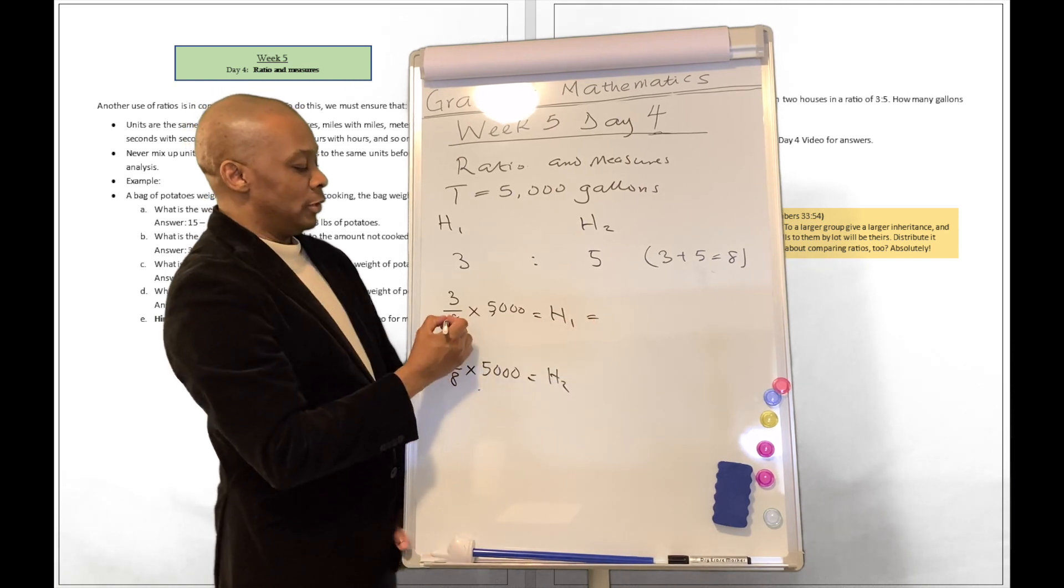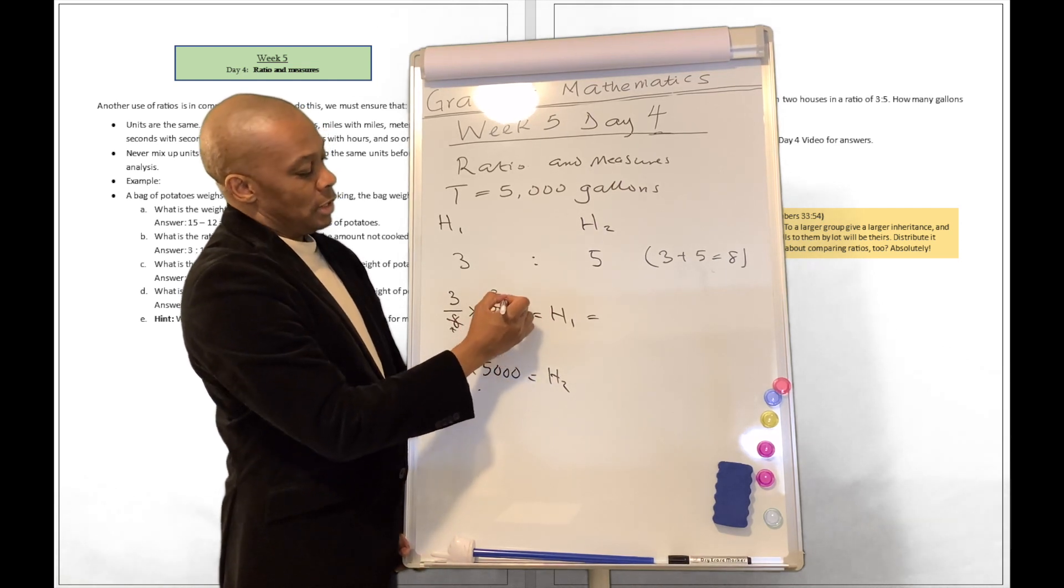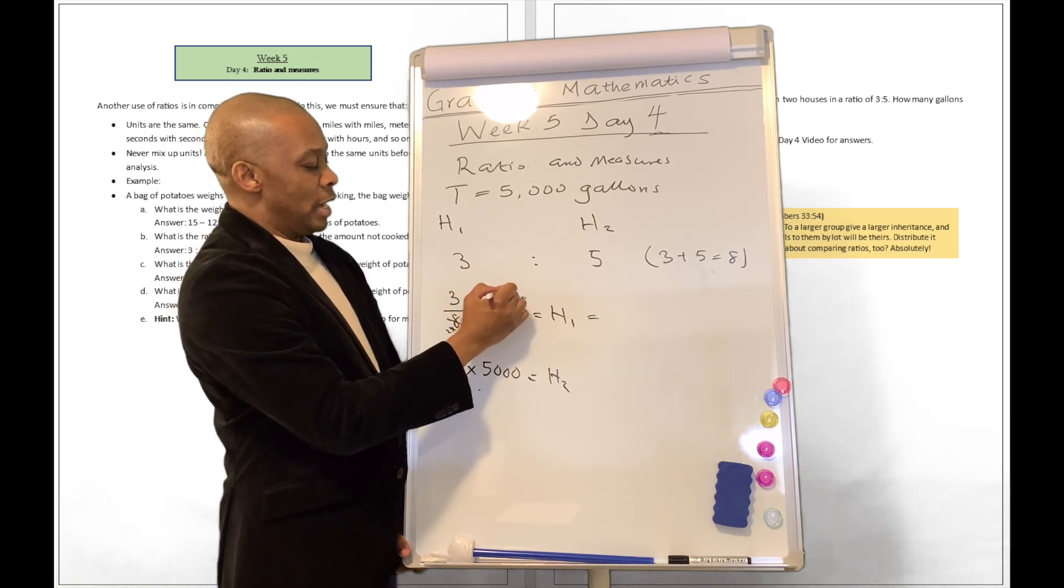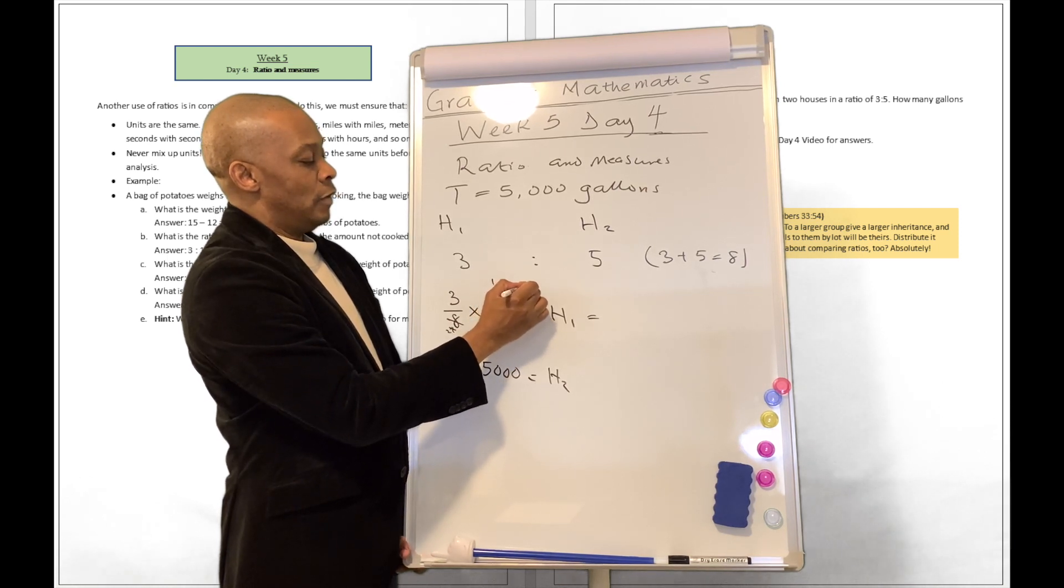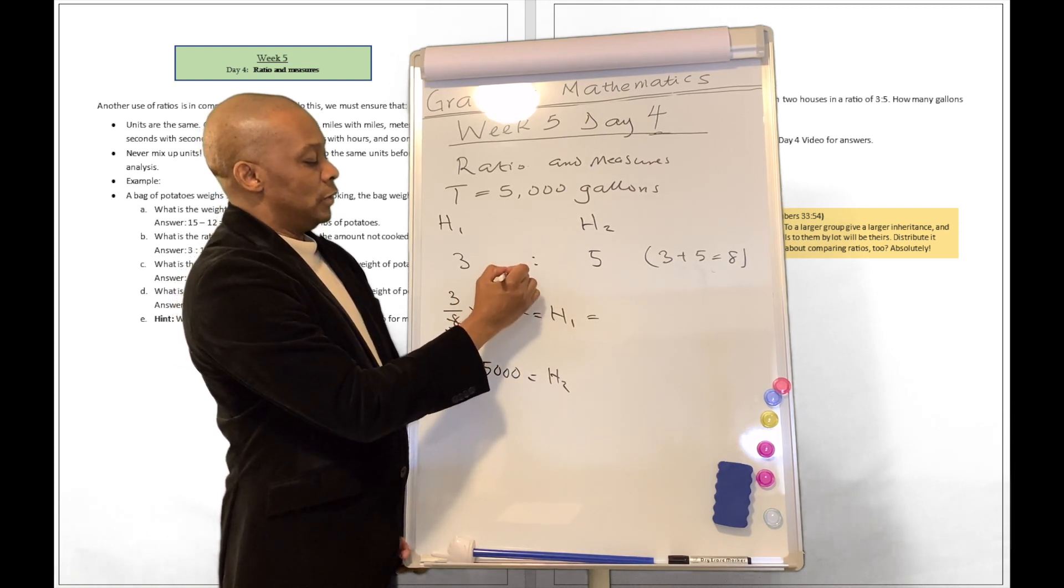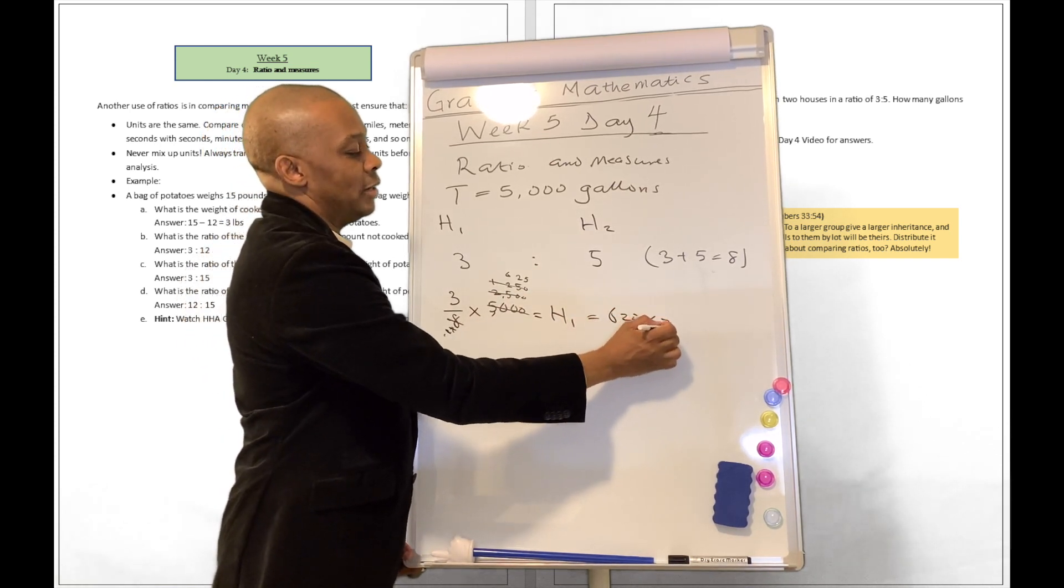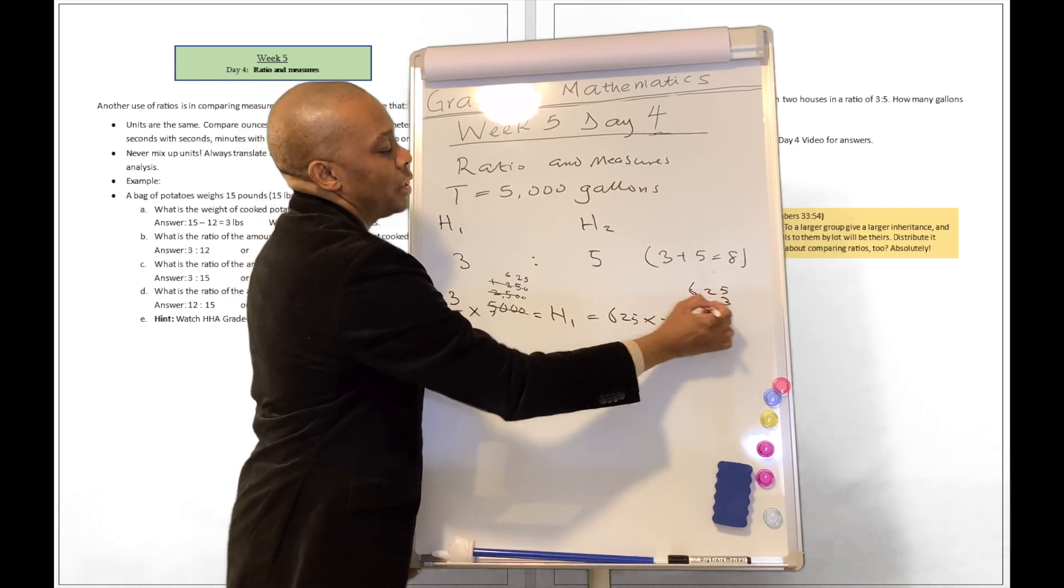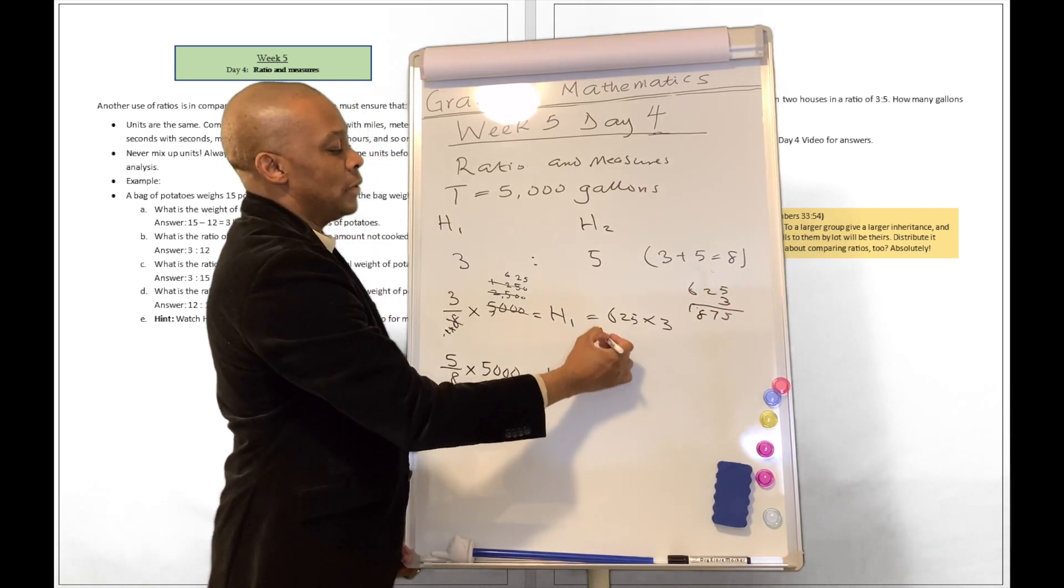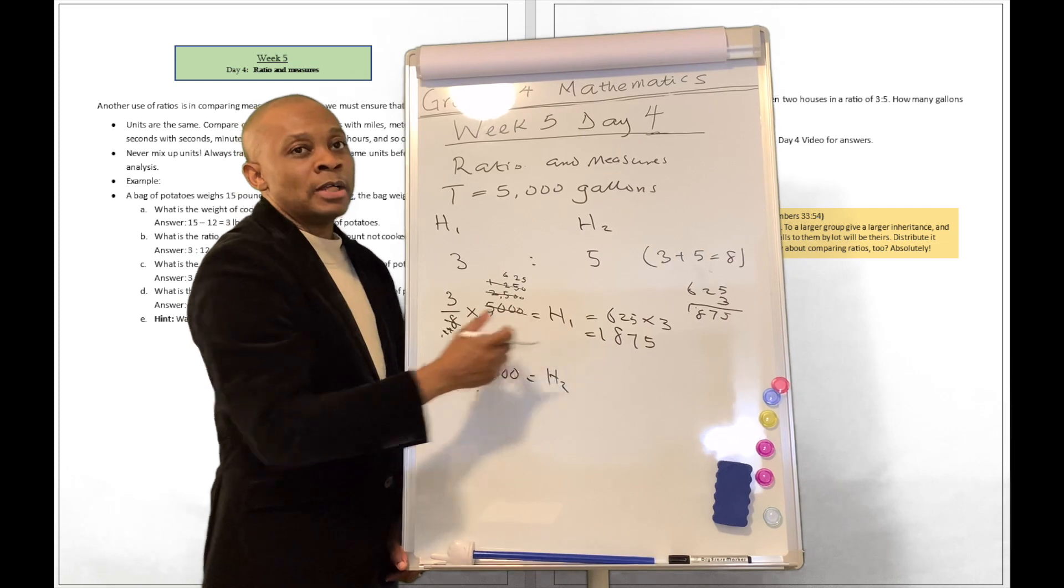Let's try to do this one. This is 2, 4. Divide this by 2, you're going to get 2,500. Divide this by 2 again, you're going to get 1,250. Divide this by 2 again, you're going to get 625. So we're going to be equaling 625 multiplied by 3. So that's 15, 7, and 18. So 1,875 gallons. That's how many gallons of water house 1 is going to get.